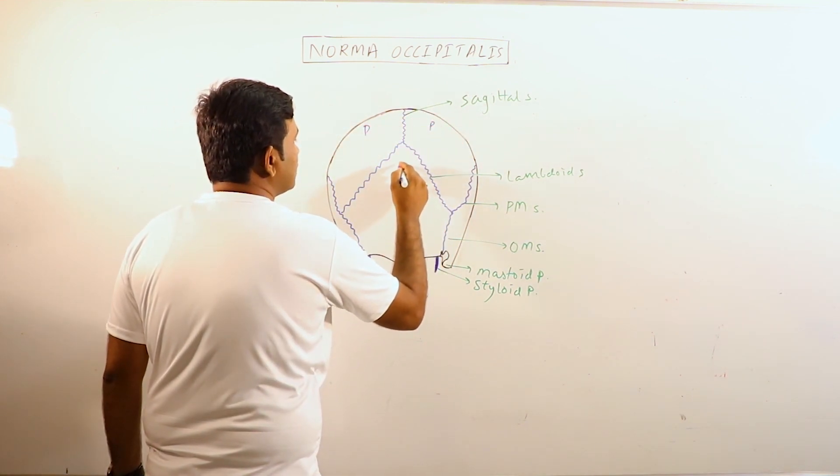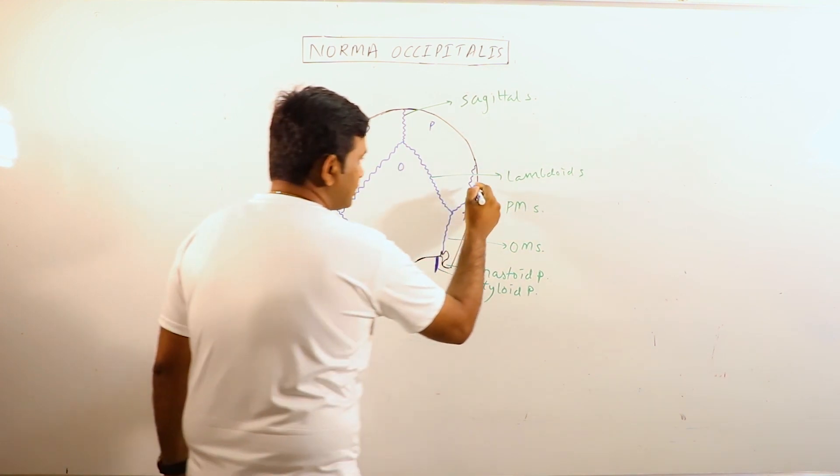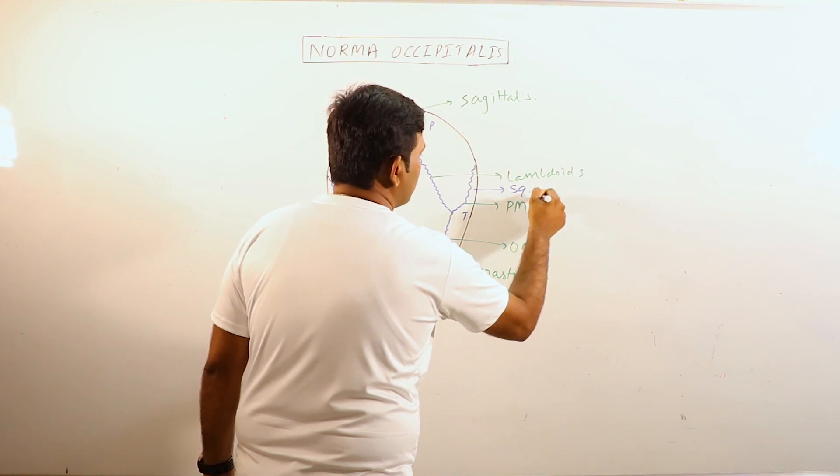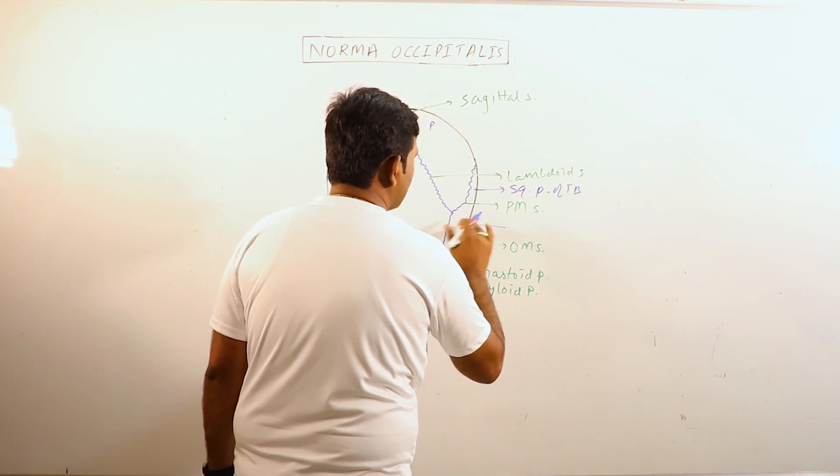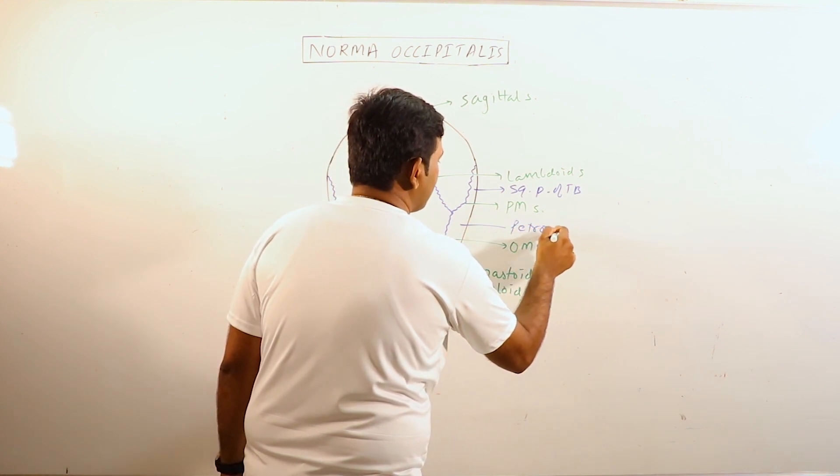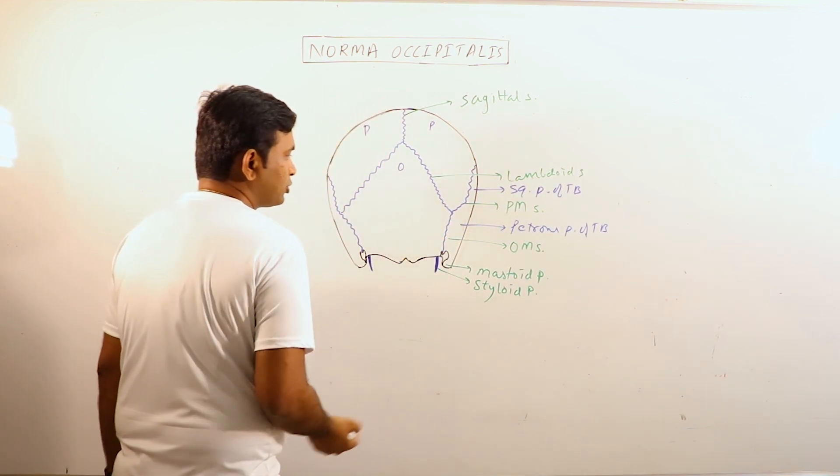These are parietal bones. This is occipital bone. This is temporal bone. This is the squamous part of temporal bone. And this is the petrous part of temporal bone. This is mastoid portion.